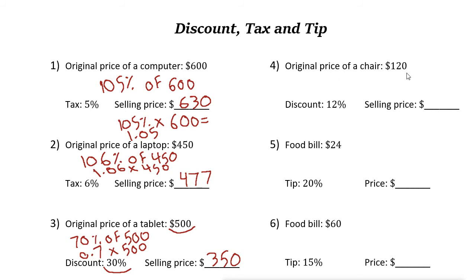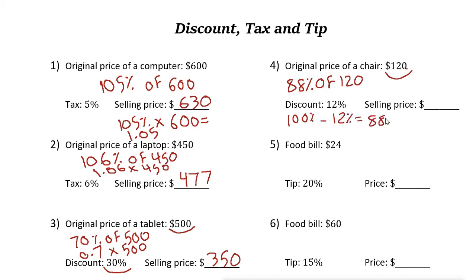Another example: the price is one hundred twenty dollars and the discount is twelve percent. Twelve percent discount means you need to pay eighty eight percent of the price, since one hundred percent minus twelve percent equals eighty eight percent. On your calculator, eighty eight percent as a decimal is point eight eight, so multiply point eight eight times one hundred twenty.